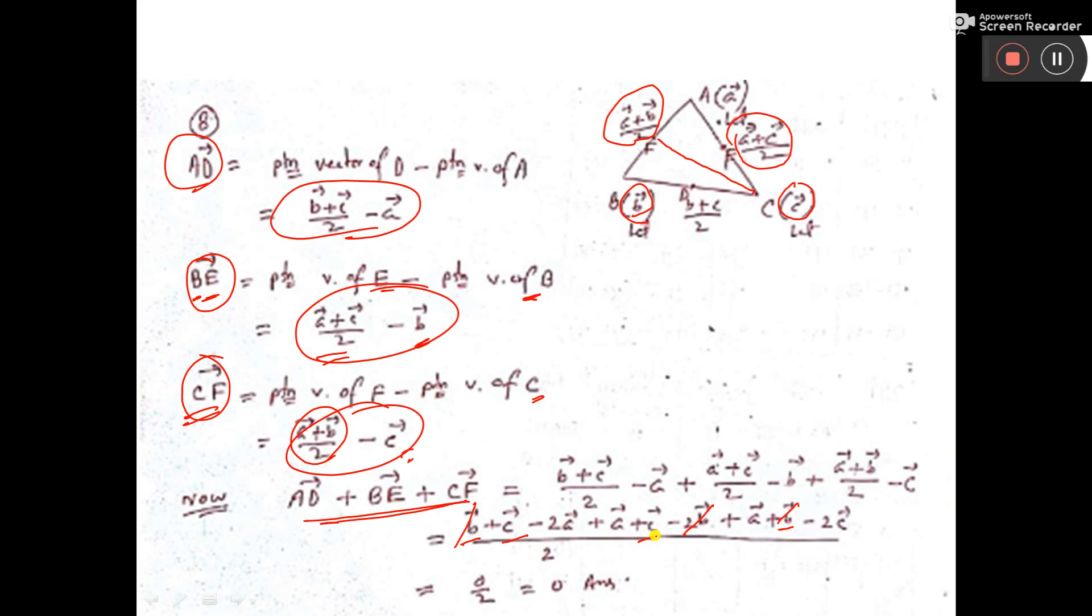C plus C equals 2c, which cancels with -2c. A plus A equals 2a, which cancels with -2a. So we get 0/2 = 0, which is what we were asked to prove.